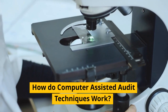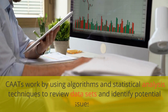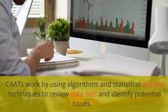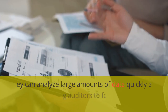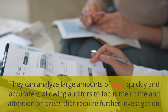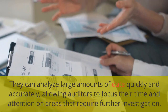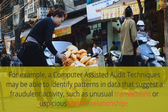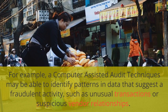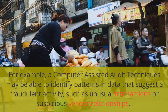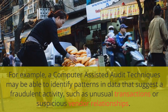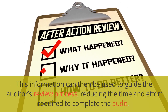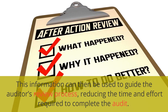How do computer-assisted audit techniques work? CAATs work by using algorithms and statistical analysis techniques to review data sets and identify potential issues. They can analyze large amounts of data quickly and accurately, allowing auditors to focus their time and attention on areas that require further investigation. For example, a CAAT may be able to identify patterns in data that suggest fraudulent activity, such as unusual transactions or suspicious vendor relationships. This information can then be used to guide the auditor's review process, reducing the time and effort required to complete the audit.